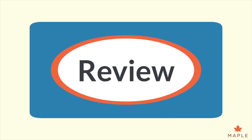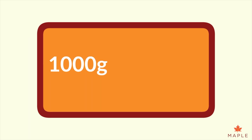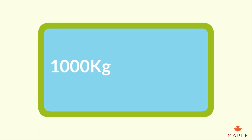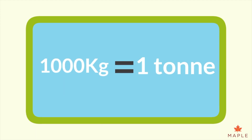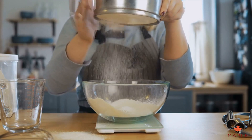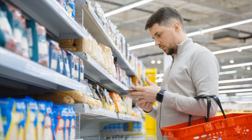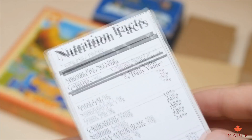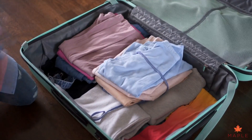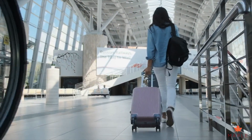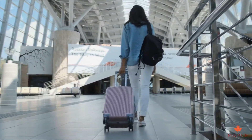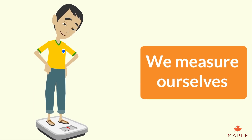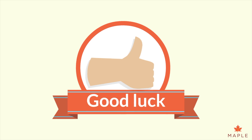Let's review weight. There are a thousand grams in one kilogram, and there are a thousand kilograms in one ton. Grams and kilograms are used all the time — for example, we measure the mass of food and show this on the packet or box, we measure how heavy our suitcase is before we board a flight, and we measure ourselves to make sure we are at a healthy weight. Have a go at the next activities and good luck!